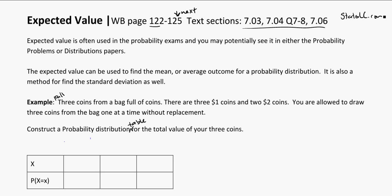Additionally, what is expected value? It is kind of exactly what it sounds like. It's what you would expect to get, or the expected value that might happen. So this is what is likely to happen. And it can often be used to find things like the mean, or an average outcome for a distribution. It's also a good method for finding a standard deviation if you need to.